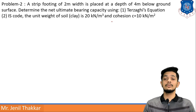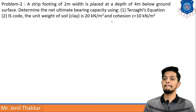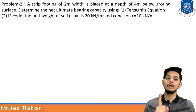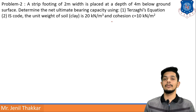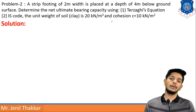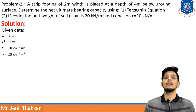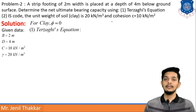Problem 2: A strip footing of 2 m width is placed at a depth of 4 m below the ground surface. Determine the net ultimate bearing capacity using both Terzaghi's equation and the IS Code method. Given data: B = 2 m, D = 4 m, c = 10 kN/m², γ = 20 kN/m³. Since it is a clay soil, φ = 0.